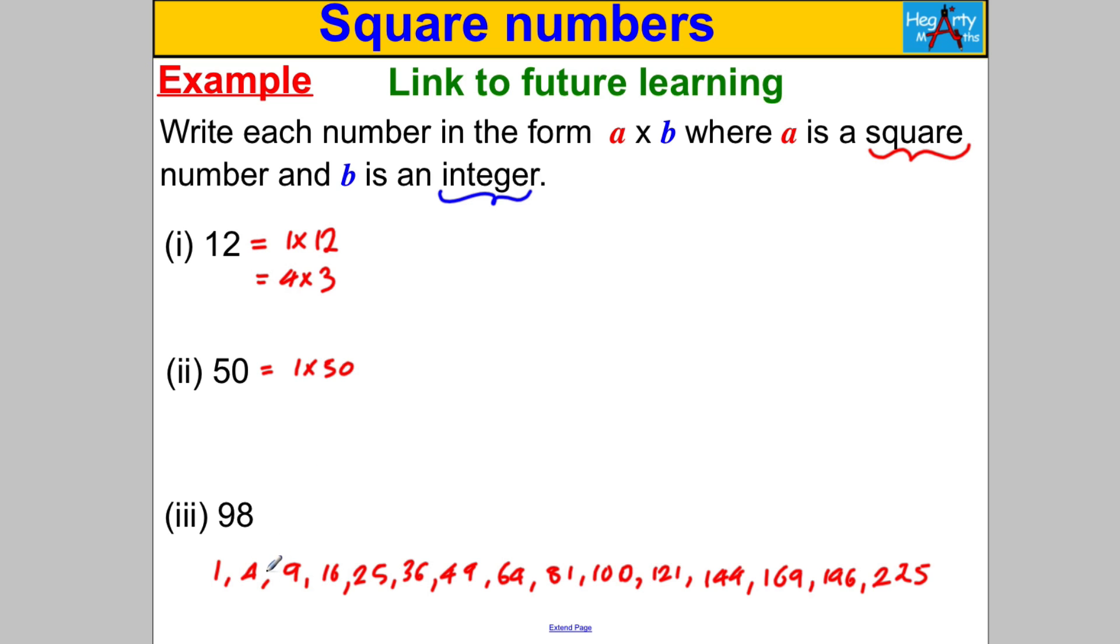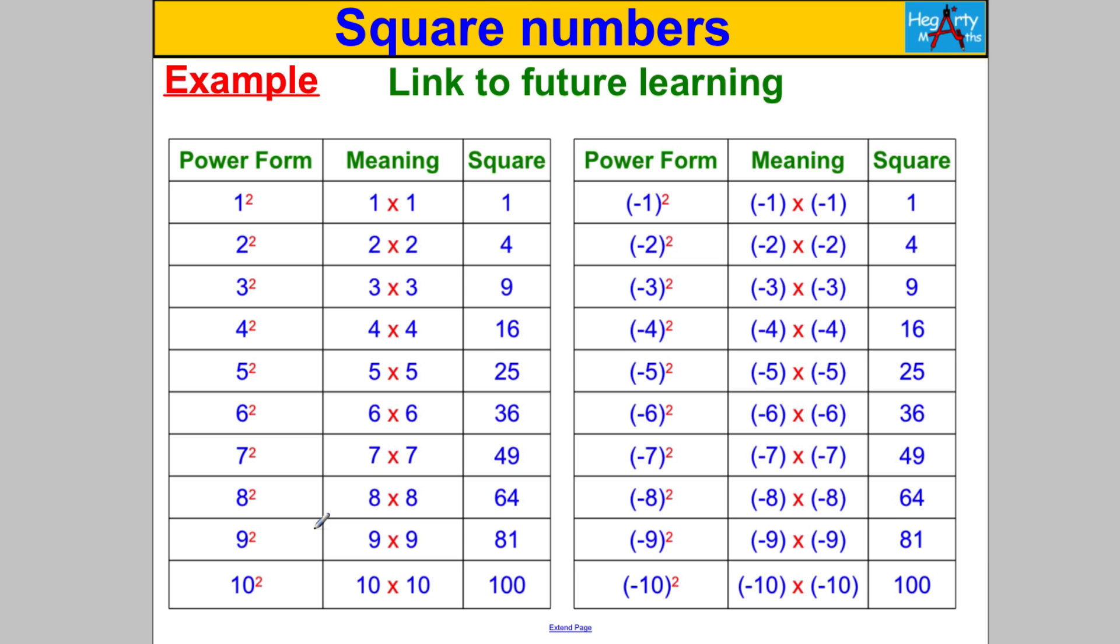For 50, we could write it as 1 multiplied by 50. Does 4 go into it? No. 9 doesn't, 16 doesn't, but 25 does: 25 multiplied by 2. For 98, does 4 go into it? Does 9? No. 16 doesn't, 25 doesn't, 36 doesn't, but 49 does: 49 multiplied by 2. Here were our A's, the square numbers, and here were our B's, the integers. This skill is going to be useful later when we're simplifying surds.